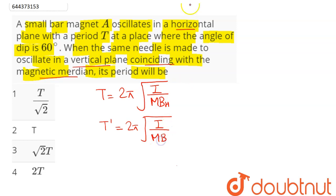Dividing these two, we get T/T' = √(B/Bh).